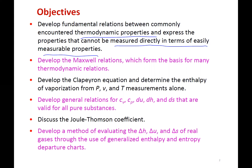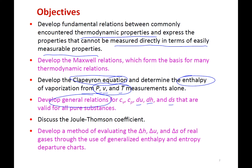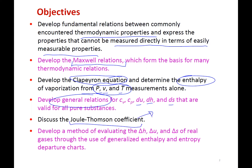We're going to develop properties using measurable quantities. We can measure pressure, specific volume, and temperature. But how do we get enthalpy, internal energy, or entropy? We'll use the Clapeyron equation we develop, along with Maxwell equations, and the Joule-Thomson coefficient — which relates to how good a refrigerant is for an expansion valve. The last section on real gases for delta U, delta H, and delta S deals with compressibility.